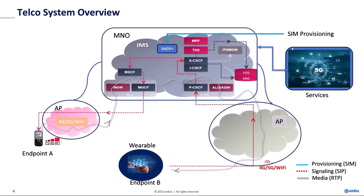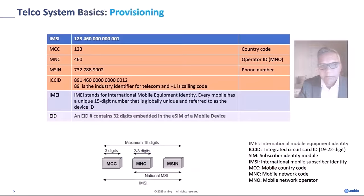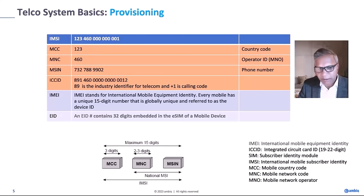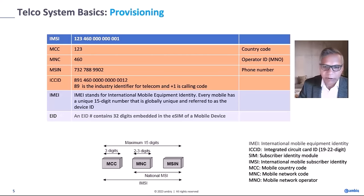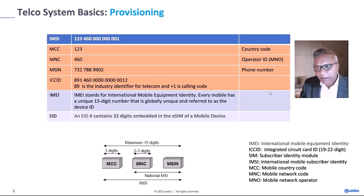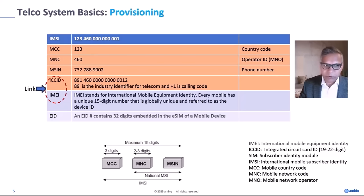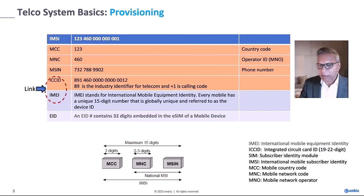The first thing we need to do is provision a device. Provisioning means getting network access. There is an element in a device called a SIM, eSIM, or iSIM that needs to be activated — every device must have that to communicate to the network. Once you provision the device you can access services from the network or service providers. Each device comes with either a physical SIM, an eSIM embedded inside the device, or an iSIM integrated inside the SoC. The purpose is to allow the device to communicate with the network, enabling billing and access management.